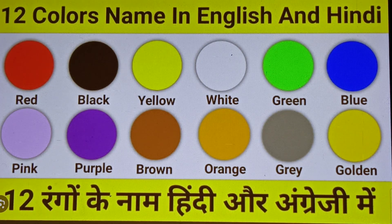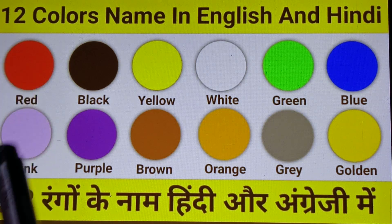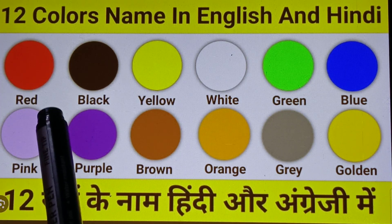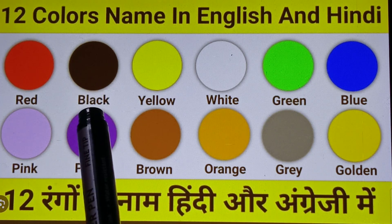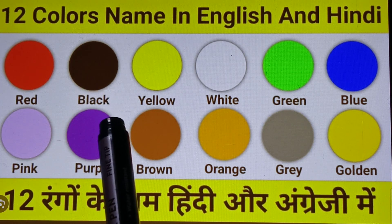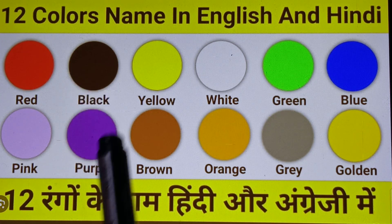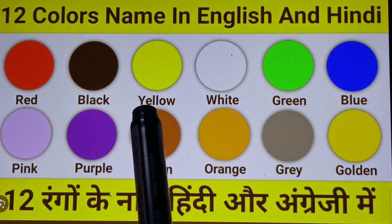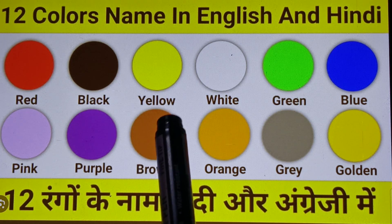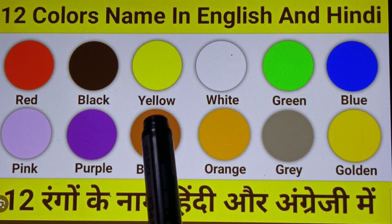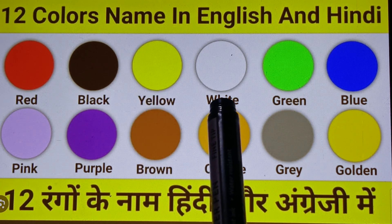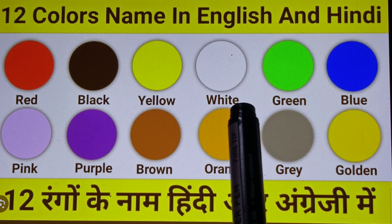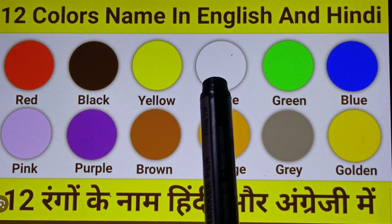Colors name in Hindi and English. First one is Red — Red means Lal. Next one is Black — Black means Kala. Next one is Yellow, Y-E-L-L-O-W — Yellow means Pila. Next one is White, W-H-I-T-E — White means Saphid.